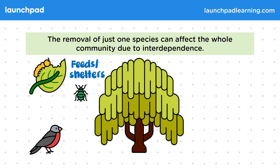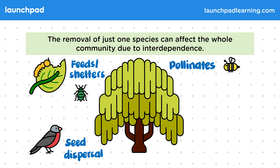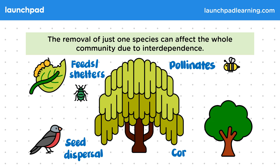Some animals, such as birds, support trees by dispersing their seeds. Bees will feed on the nectar and in return pollinate the tree. And organisms nearby will compete for resources.